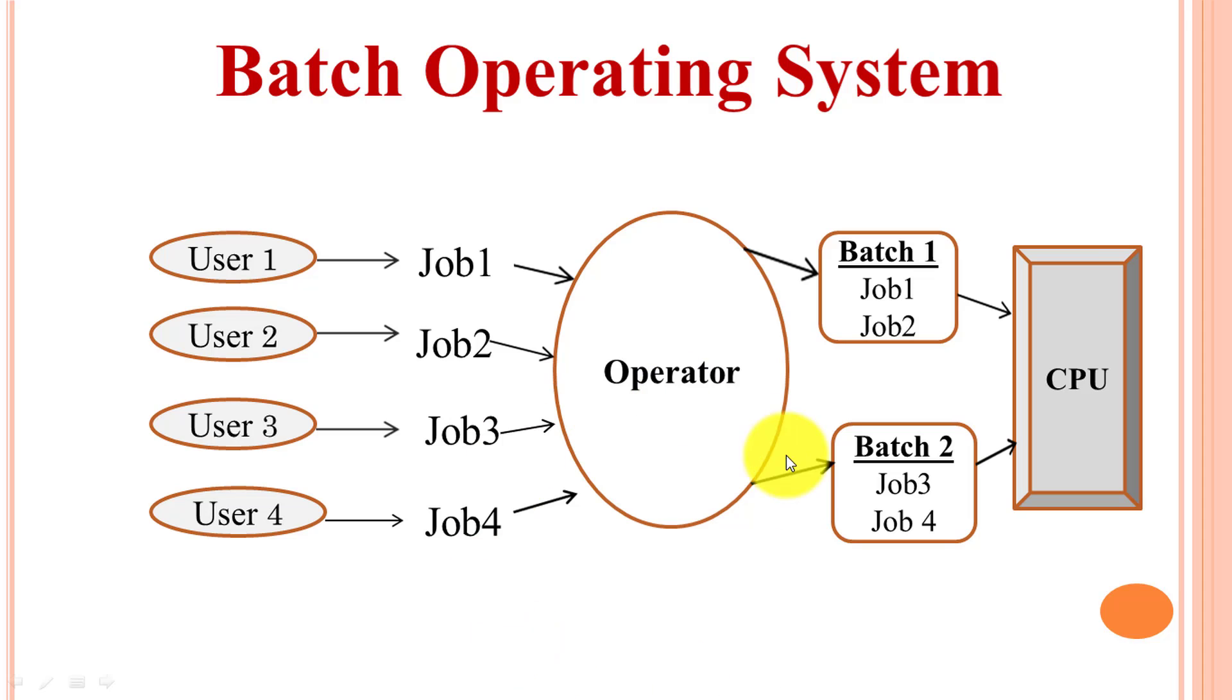In this diagram there are 4 users and these 4 users have respective 4 jobs: job 1, job 2, job 3, and job 4. All these jobs are submitted to the operator. Then the operator makes batches according to common needs of jobs.